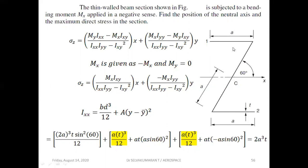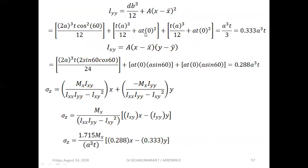The overall centroidal YY axis passes through the centroid of both the top and bottom flanges, so the x-distance (x minus x-bar) is zero for both flanges. This leaves only the db³/12 terms for each flange. Simplifying gives Iyy = 0.333·a³t.